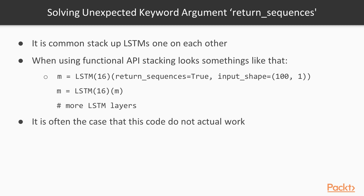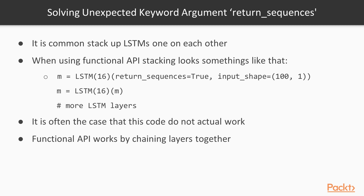The problem with this code is that even though at first it looks pretty clear, and you might see that it works, it doesn't. This is because there's a slight error in understanding about how the functional API works in this case.